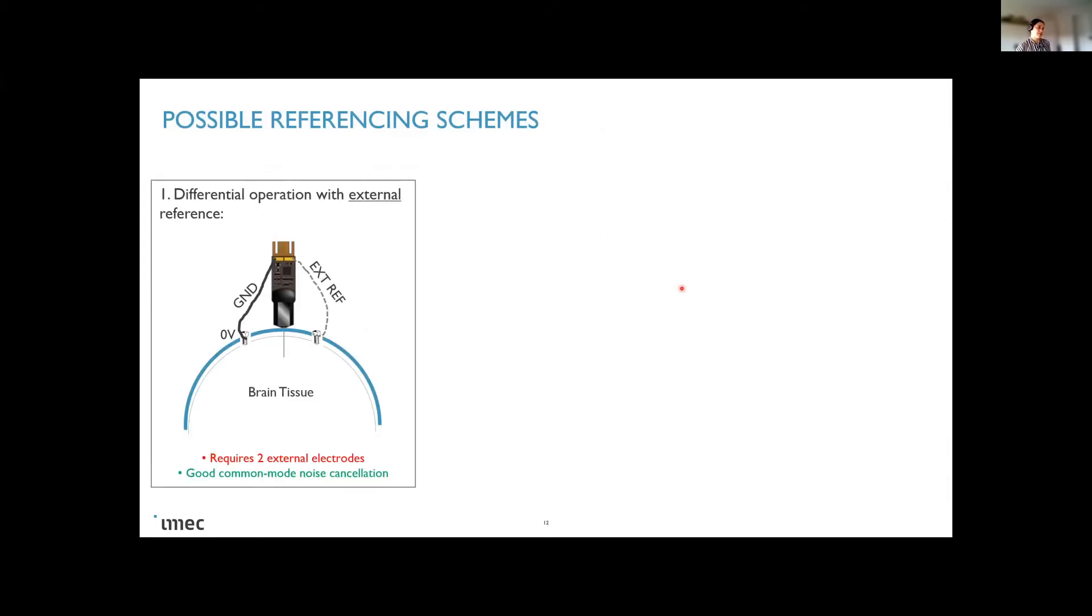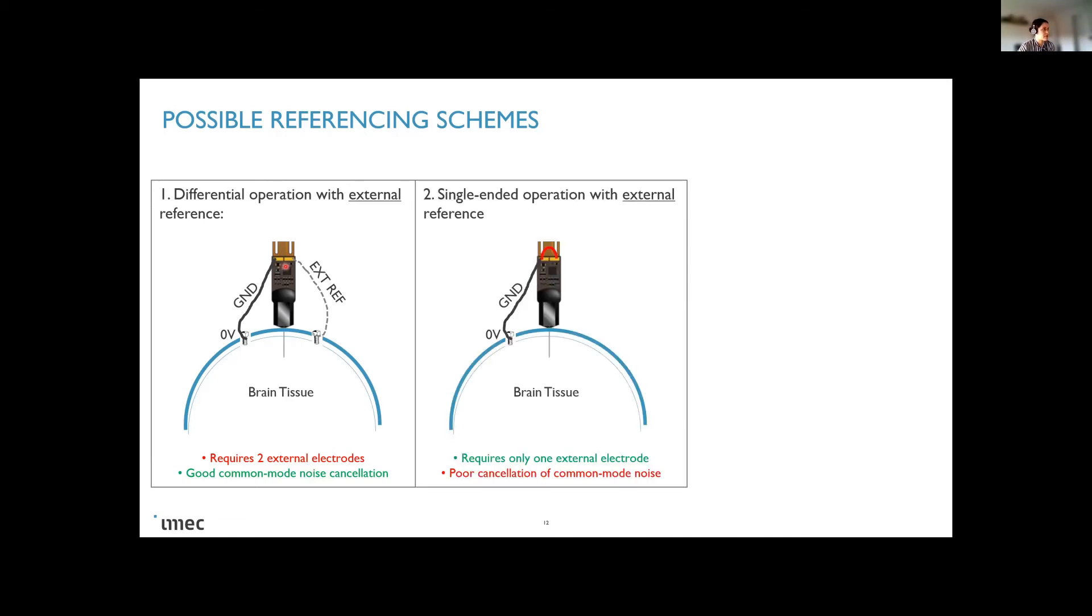And here I'm also showing some possible grounding schemes from the electronic point of view. This is a differential amplification with an external reference electrode. In the probe, you have two soldering pads where you can connect one external reference, the other is a ground. An issue here is that you will require two external electrodes, but you will have good common mode cancellation if you don't connect these two signals together.